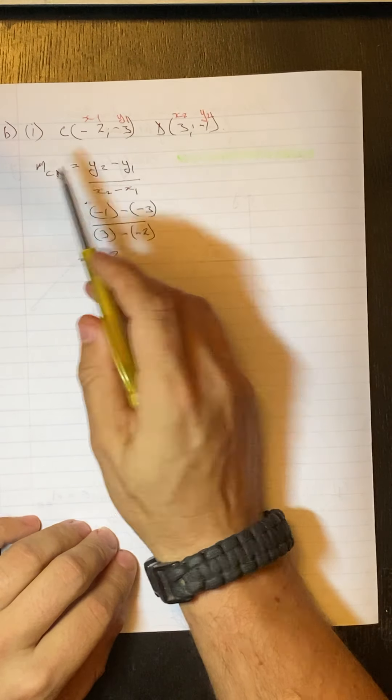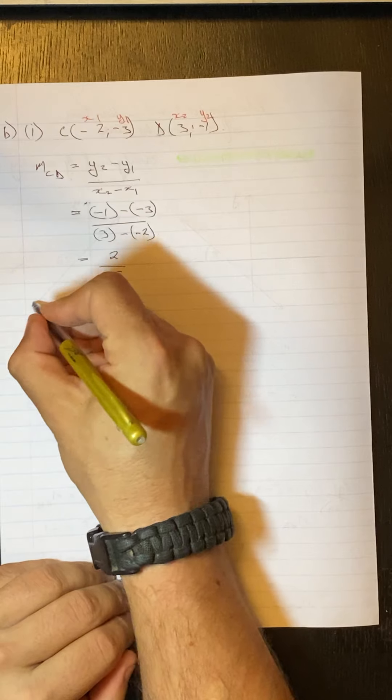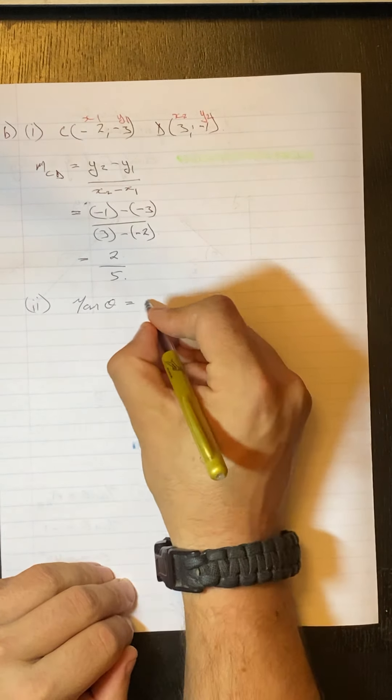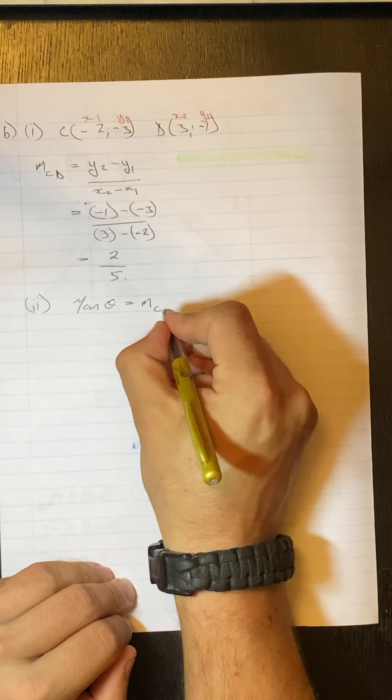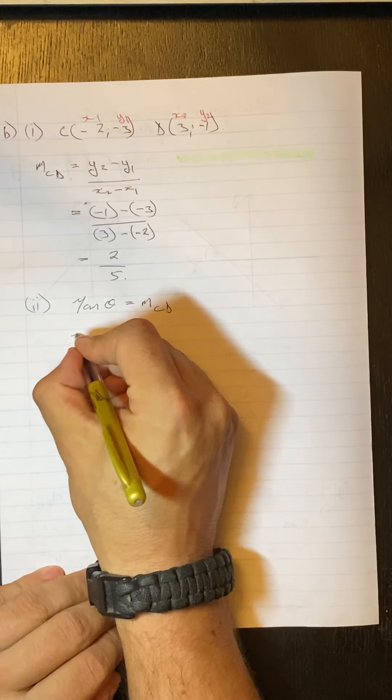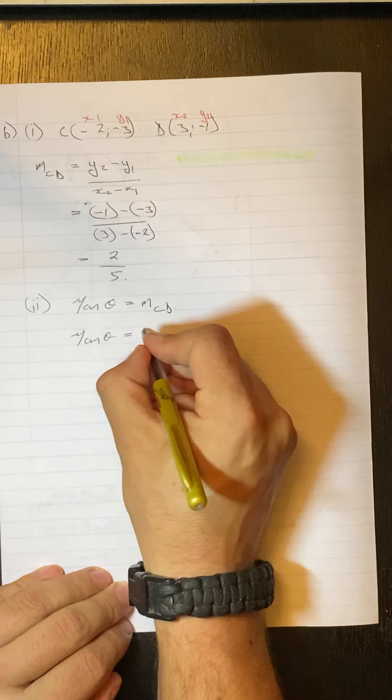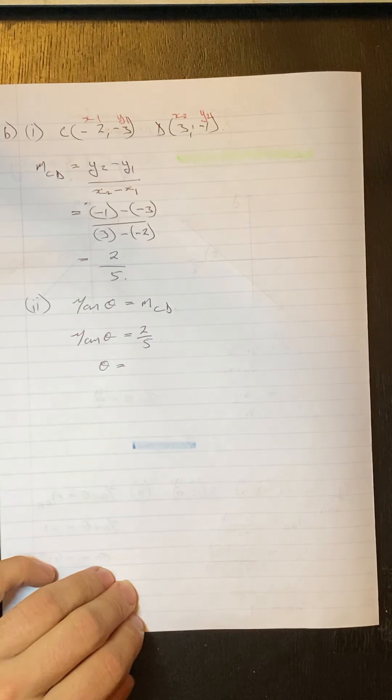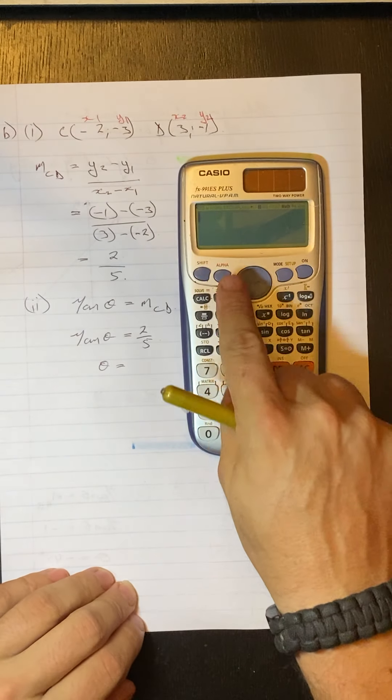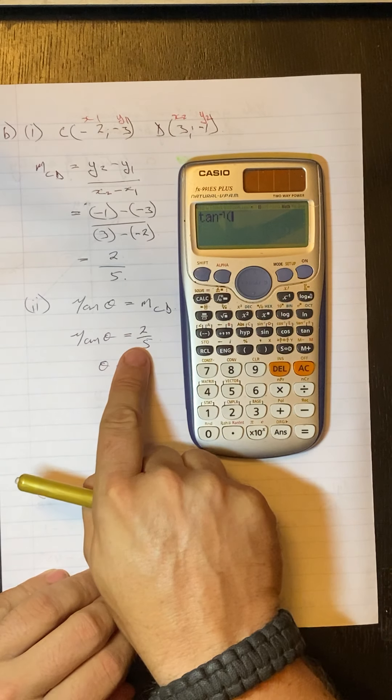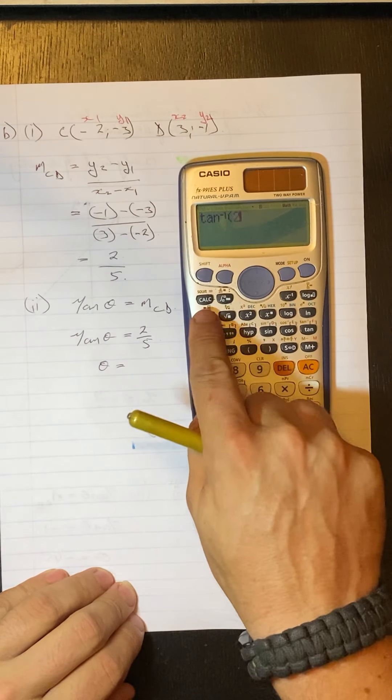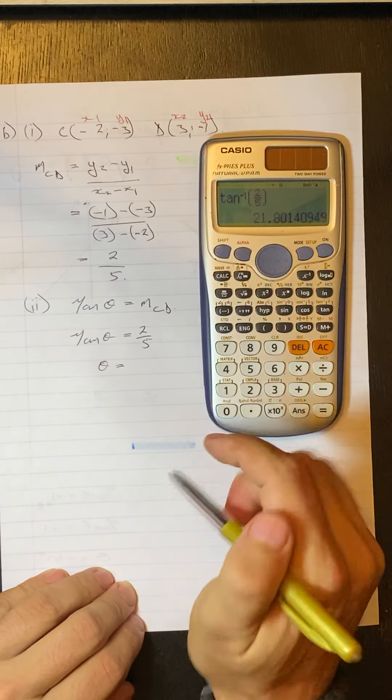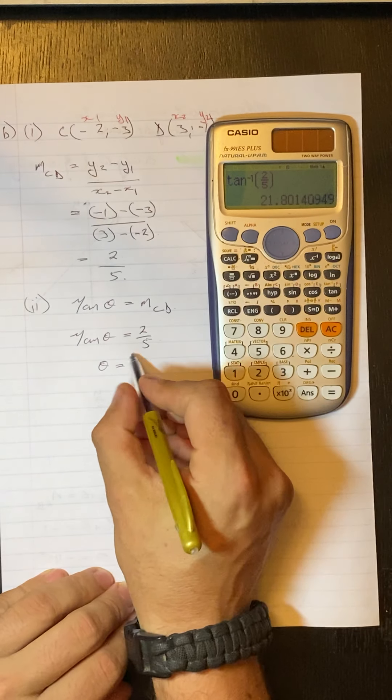So now we know what the gradient is. In order to work out the angle of inclination, that is going to be equal to the gradient of our line. So, we get tan theta is equal to 2 over 5. In order to work out theta, you take your calculator and you go shift tan, that number over there, 2 over 5. And we get an angle of 21.8, rounded off to one decimal place.